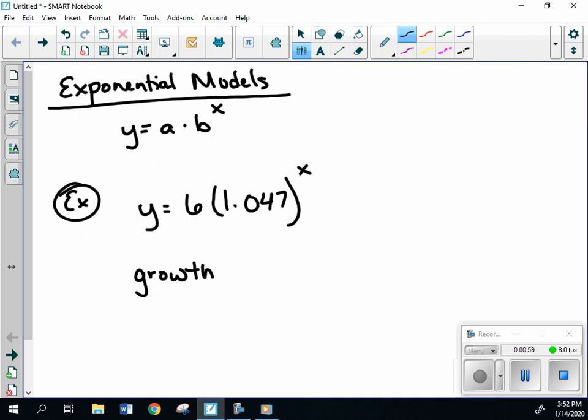So in order to find that rate, you're going to take that number and subtract 1 from it. The reason why is because that 1 represents 100% if you were to remove that decimal. So therefore, your rate here is going to be 0.047 or 4.7%.